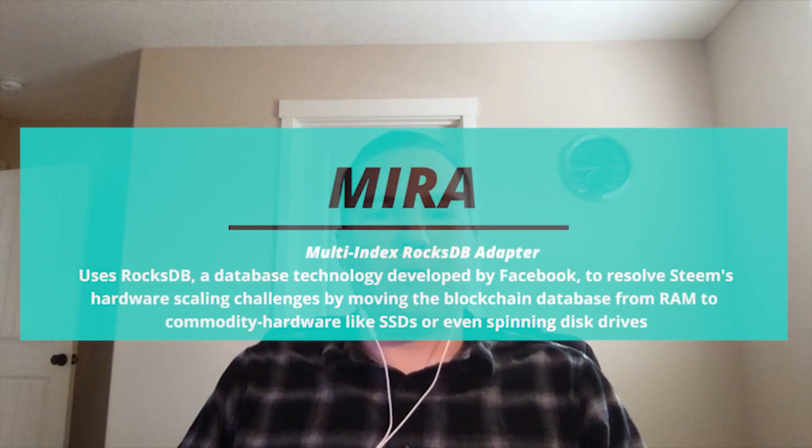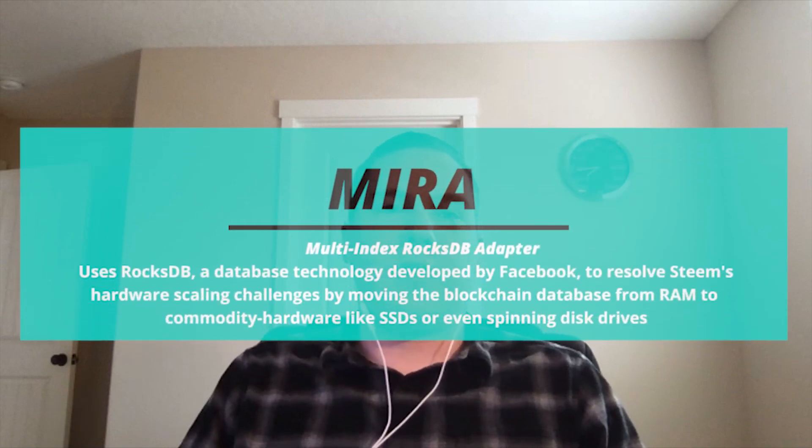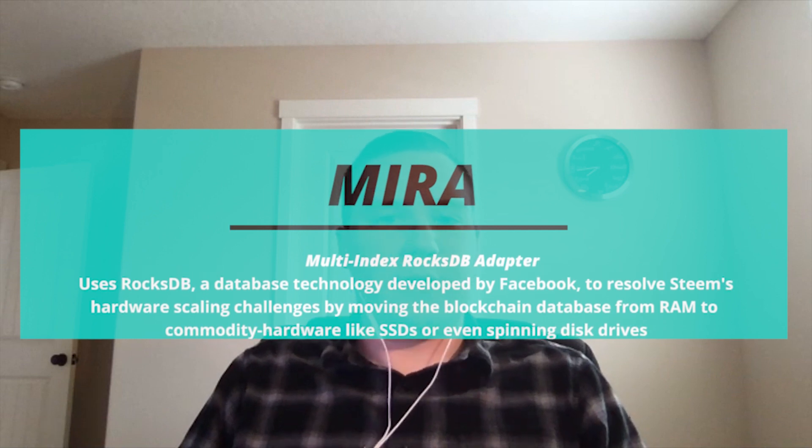Mira dramatically reduces the cost of running Steam nodes by migrating the Steam blockchain database from expensive high-performance hardware to low-cost, run-of-the-mill hardware like network-attached SSDs or even old-school spinning disk drives. It's our brand new blockchain scaling solution — a complete replacement for the database backend — that utilizes technology called RocksDB, and will allow us to run the entire Steam blockchain much more cost-efficiently on disks rather than on NVMEs or in RAM disks, essentially putting our hardware scaling issues to rest once and for all.